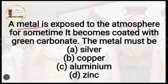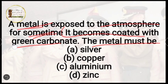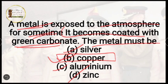Question 50: a metal is exposed in the atmosphere for some time and becomes coated with a green carbonate. The metal must be — silver, copper, aluminium, or zinc? The correct answer is option B, copper. When copper is exposed during monsoon or rain, green corrosion appears on it — it basically forms a hydroxide and carbonate of copper.